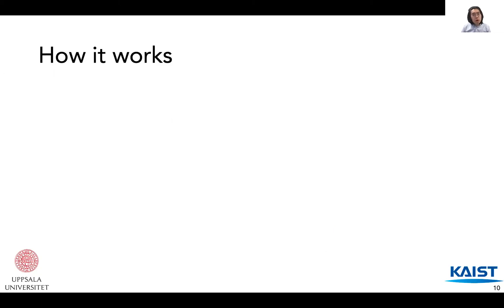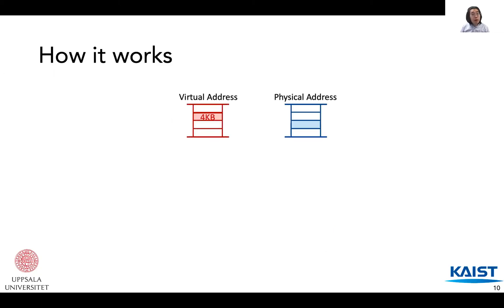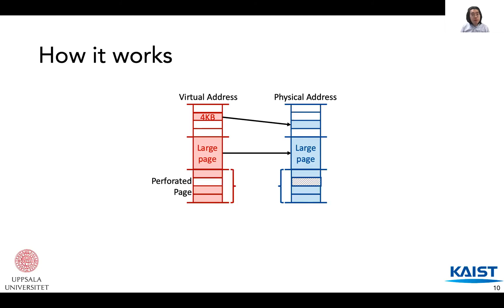Next, let's look at how perforated pages work. First, we have a 4KB regular page mapping. Next, we have a 2MB large page mapping. Finally, we have a perforated page that maps to a large page region, and a hole in the perforated page that maps to another regular page.